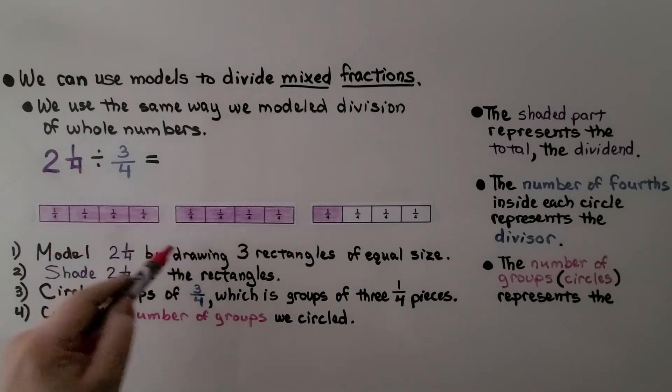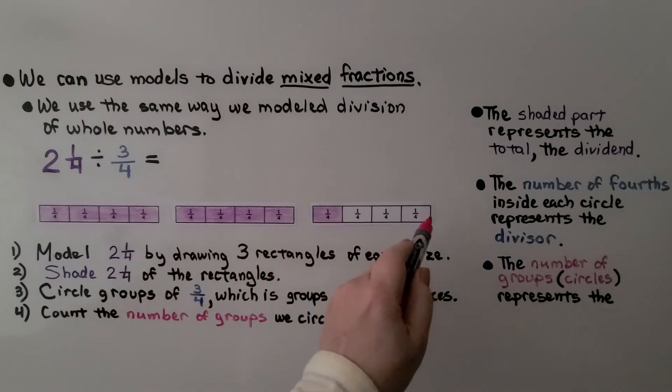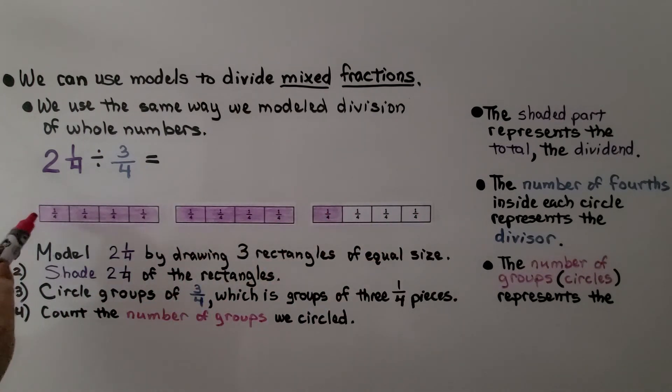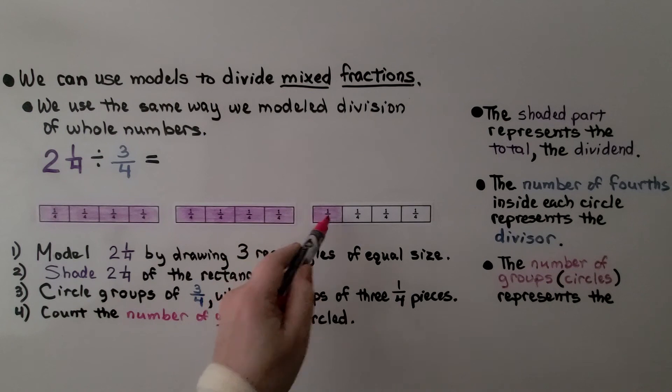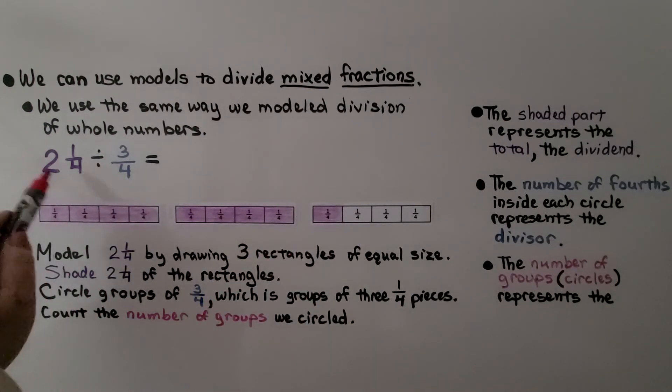So now we've got three rectangles and we split them into fourths. So we have four-fourths here, four-fourths here, four-fourths here, and we shade in one, two, and one-fourth. The shaded part represents the total, the dividend.